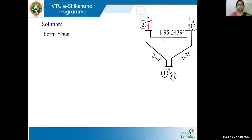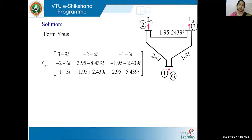This is the network drawn as per the line data. We took the inverse of the impedances to get the respective line series admittances. By inspecting this network we form the Y-bus. Y11 equals (2 - j6) + (1 - j3) = 3 - j9. The off-diagonal element Y12 is the negative of the admittance: -2 + j6, and Y13 is -1 + j3. The Y-bus is formed using the inspection method.